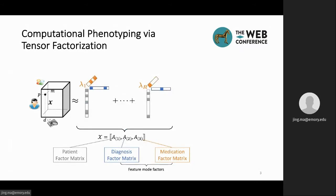Computational phenotyping via tensor factorization involves factorizing the EHR tensor X into three factor matrices, A1, A2, and A3. In this case, each factor matrix can be seen as the low-dimensional representation of patient, diagnosis, and medication.